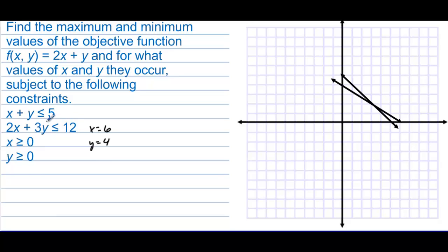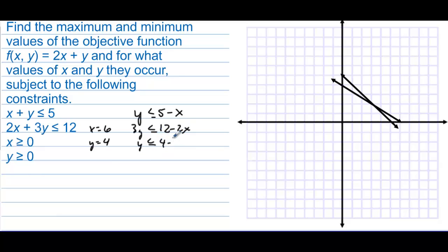The inequalities are both less than, which means underneath or below the line, as long as these are positive. As long as we can write these in slope-intercept form and it doesn't change the sign — in other words, we move x over and it stays as a less than. When we write the other one in slope-intercept form, we'd have 3y ≤ 12 − 2x, and dividing by 3 keeps it less than. Both regions are below their respective lines, and we're above the x-axis and to the right of the y-axis — in other words, in the first quadrant.